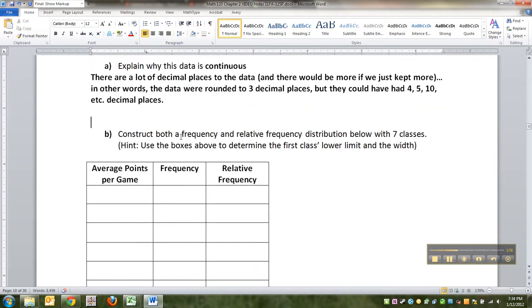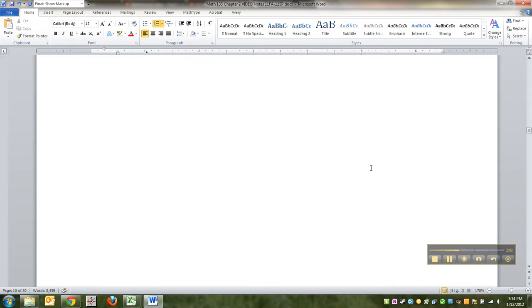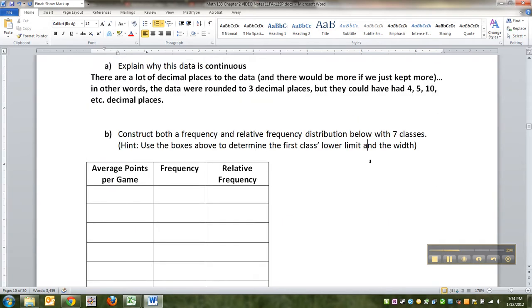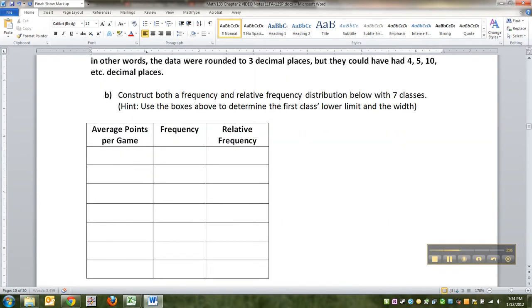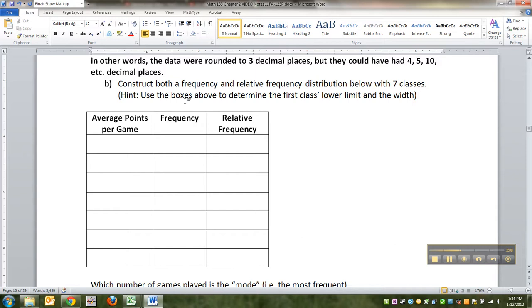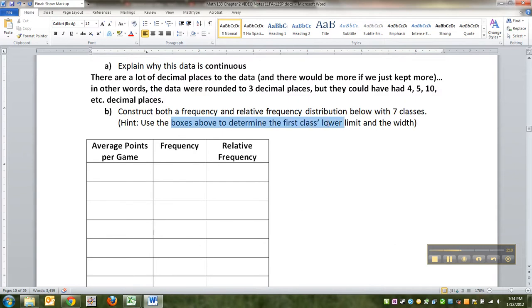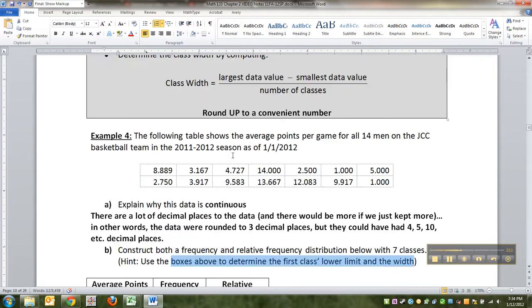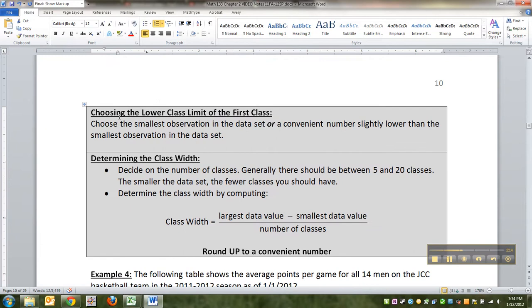Okay, so we're going to construct both a frequency and a relative frequency distribution below with seven classes. And I have a feeling we're going to make histograms for that stuff later. We're going to use the boxes above to determine the first class's lower class limit and the width.